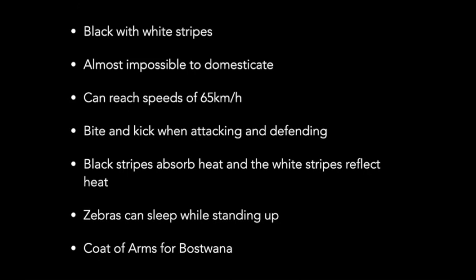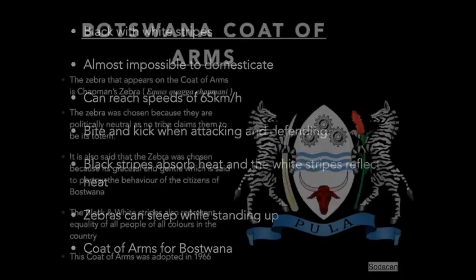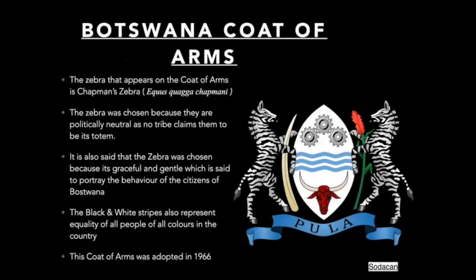Zebras can sleep standing up, which is commonly associated with giraffes but is also true of zebras. The zebra is also part of the coat of arms for Botswana. In the coat of arms, we have two zebras, a shield, an elephant tusk, sorghum, and the motto 'Pula' with a blue band. The zebra featured in the coat of arms is specifically the Chapman's zebra.